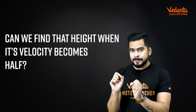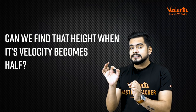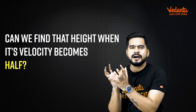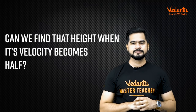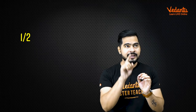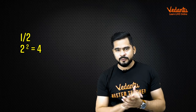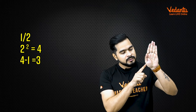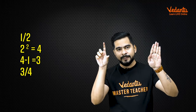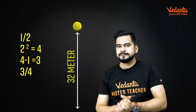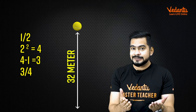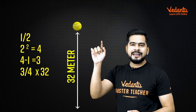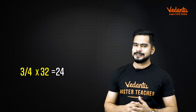In the question, given that at what height does its velocity become half — catch that word: half. One by two. Take the square of the denominator: two squared is four. Minus one: that gives three as the numerator. So one-half becomes three by four. Multiply that by the maximum height of the question: three by four into 32. The answer is 24. That's it! This is the super amazing trick, baccha party.